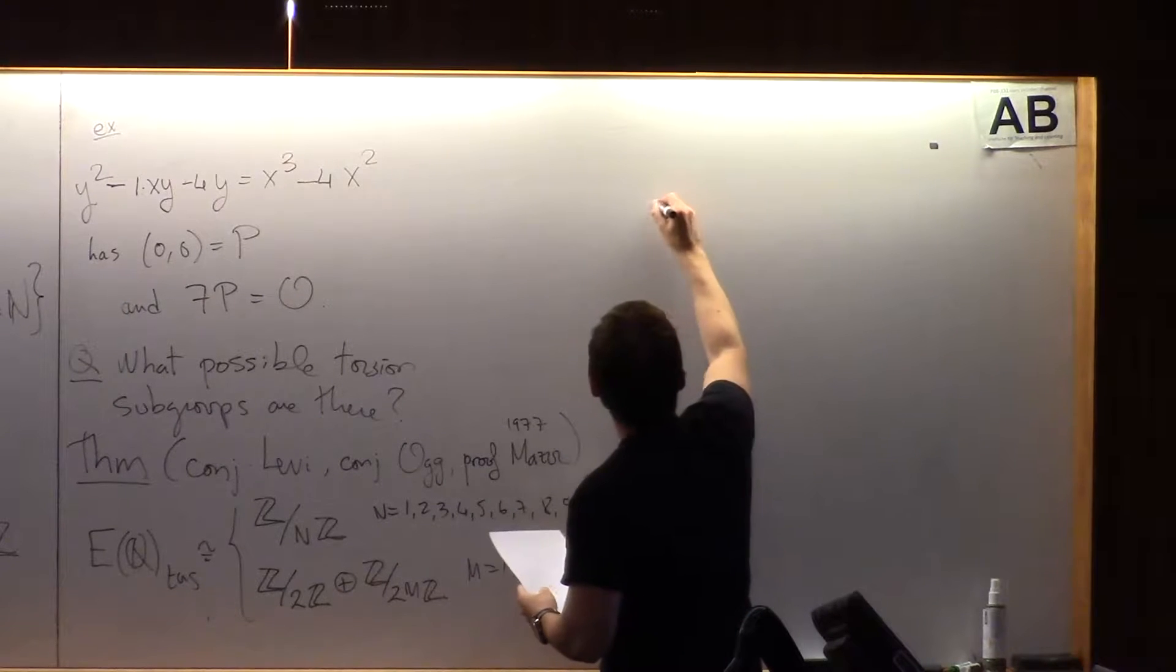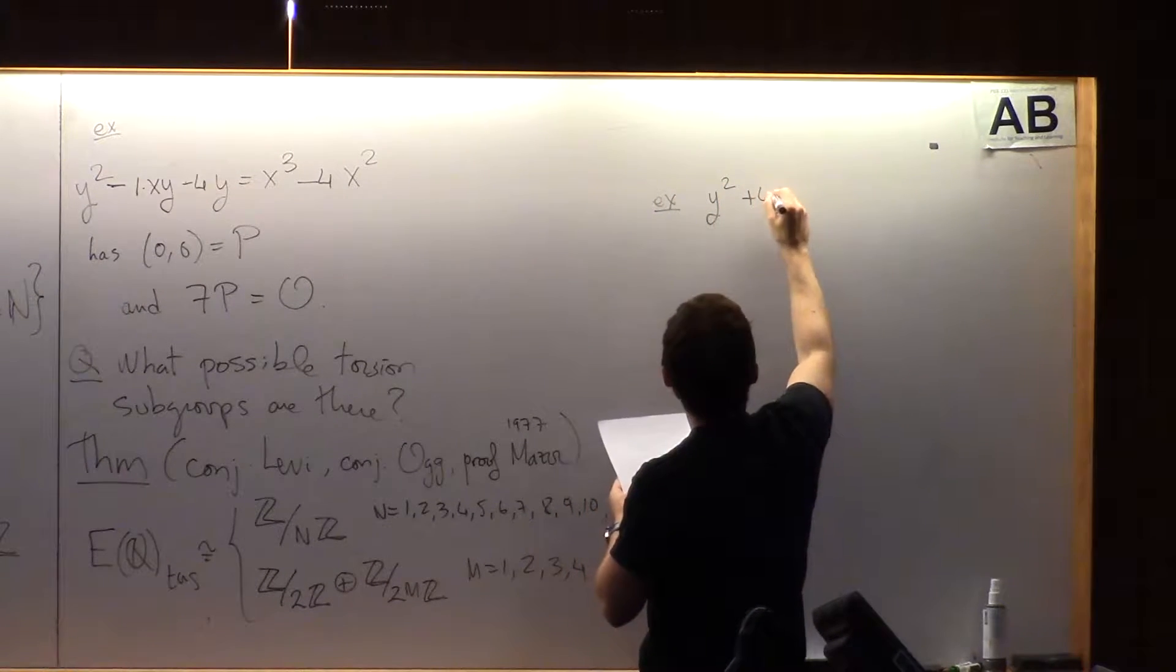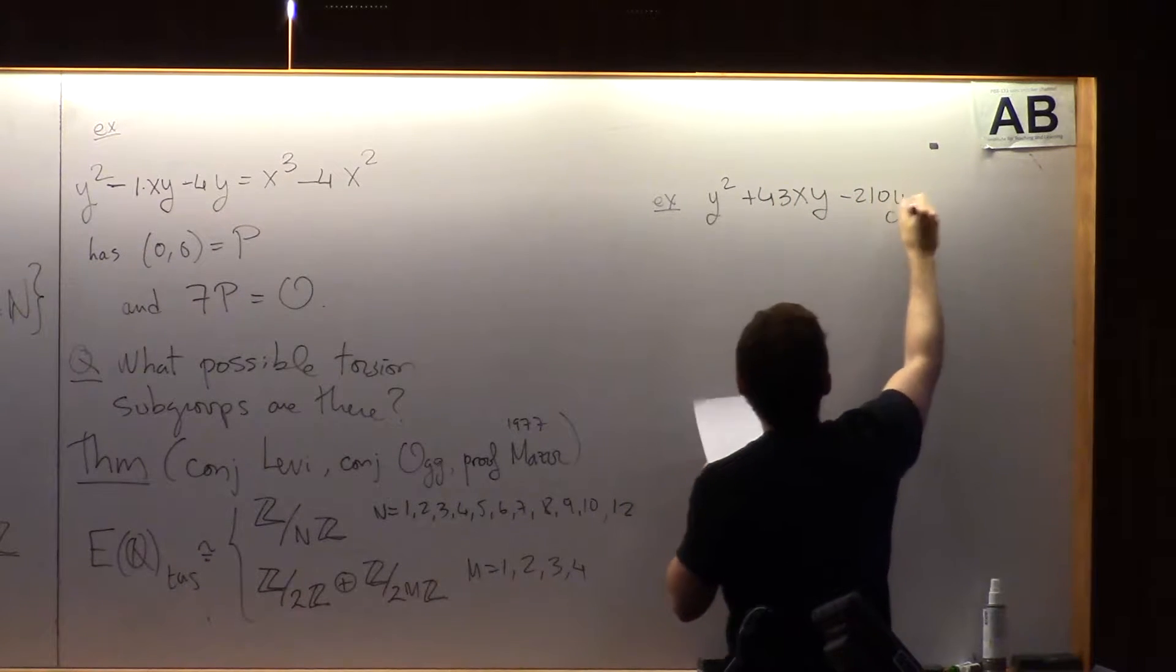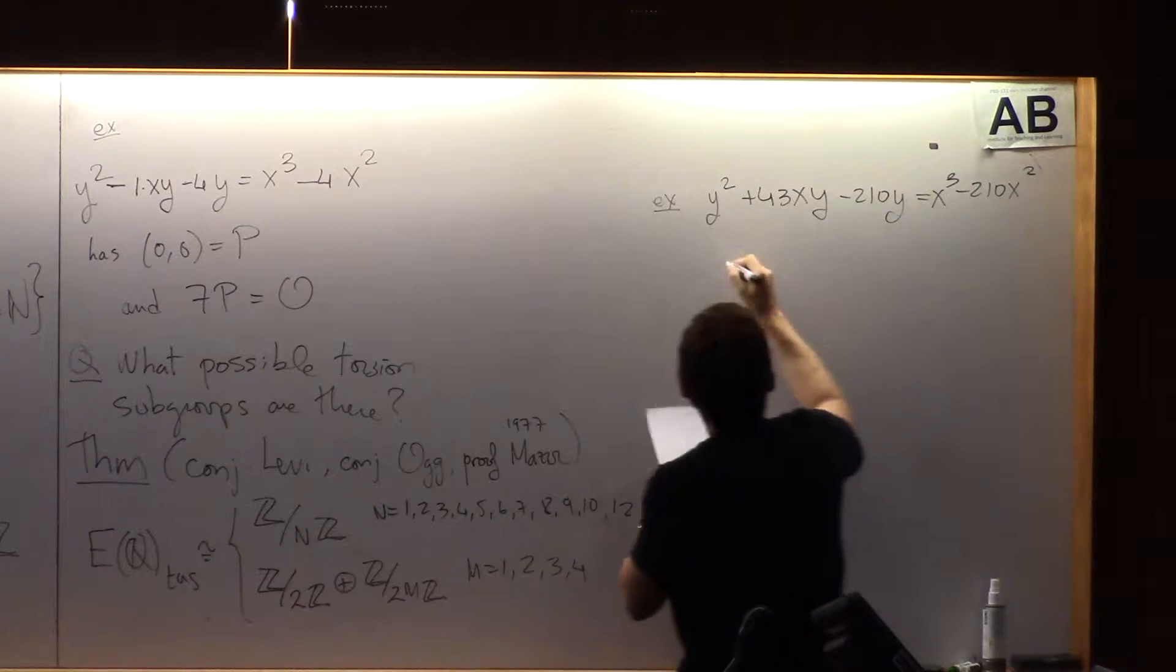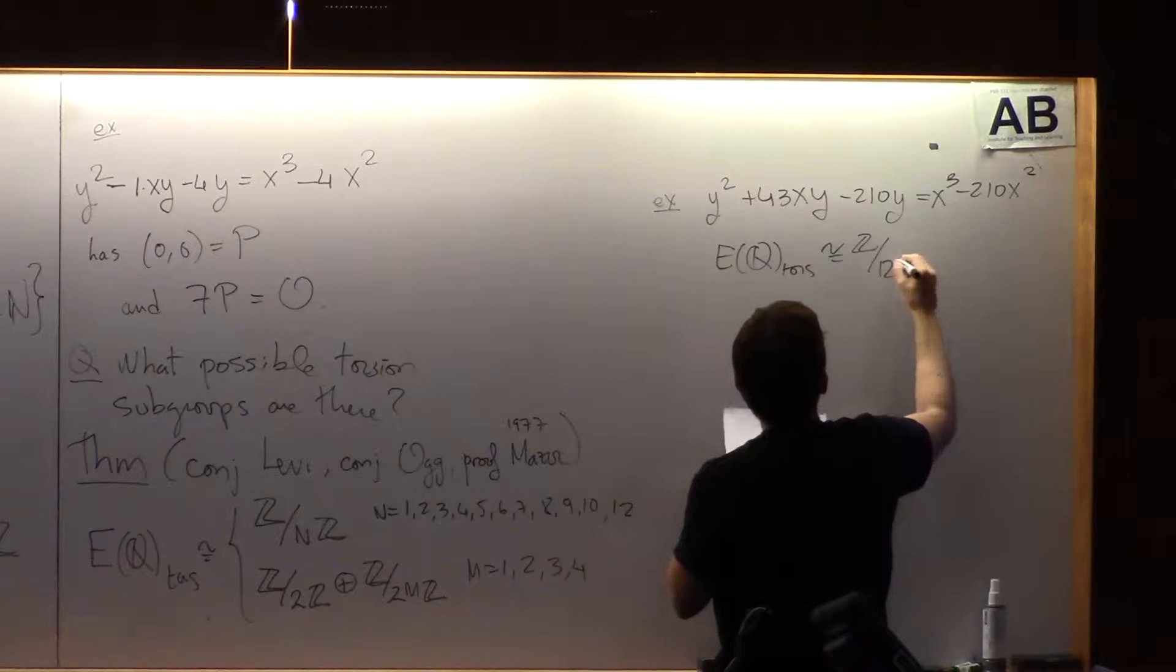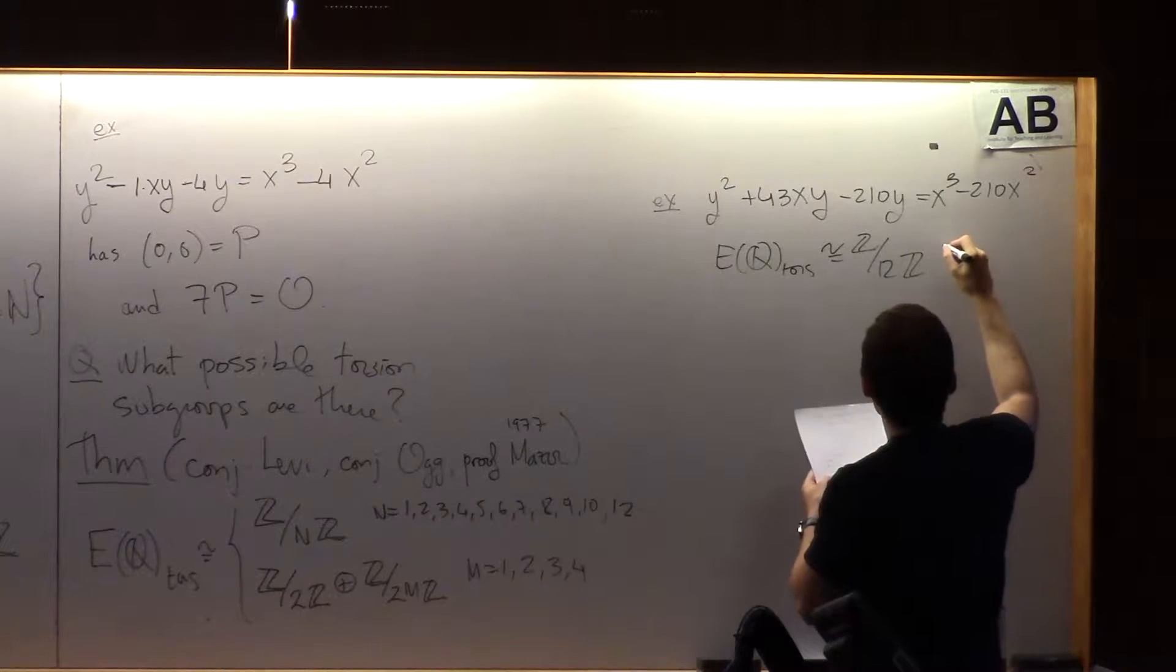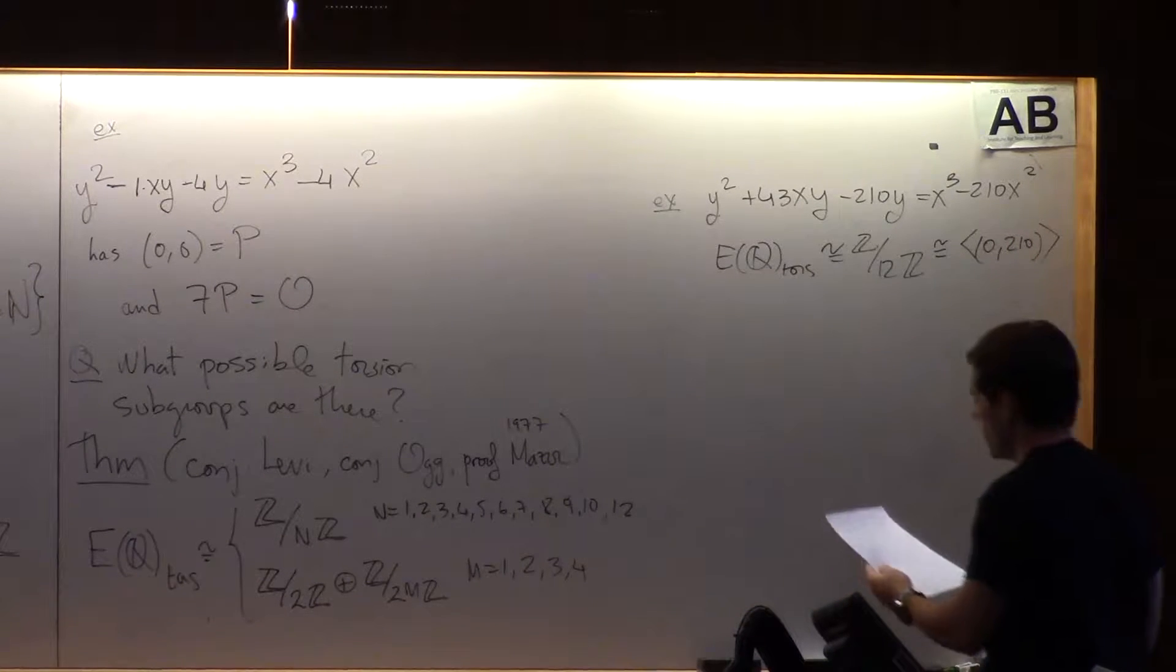Here's an example of an elliptic curve that has a point of the largest order. You don't have to go too far to find those. So here the torsion is of order 12, and the generator is (0,10).